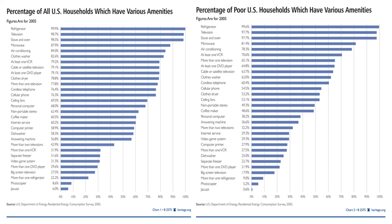One focal point of Rector's argument is two graphs: on the left, the amenities that all households in the U.S. have, and on the right, the amenities that all poor households in the U.S. have. There is a pretty similar distribution between the poor and all households, depicting that even poor people have basic necessities such as refrigerators, stoves, ovens, microwaves, and air conditioners.